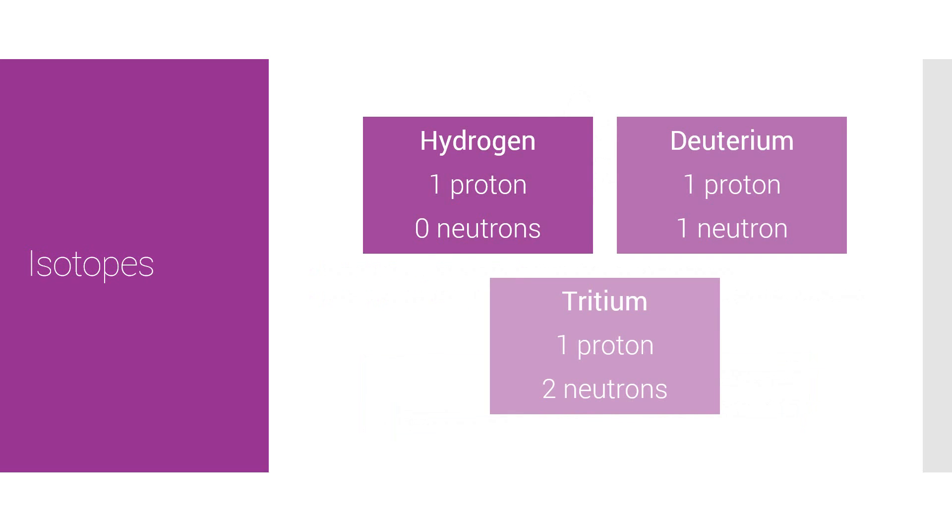Hydrogen has three natural isotopes. You can find hydrogen with one proton and zero neutrons, this is known as hydrogen. Or one proton and one neutron, this is known as deuterium. Or with one proton and two neutrons, tritium.